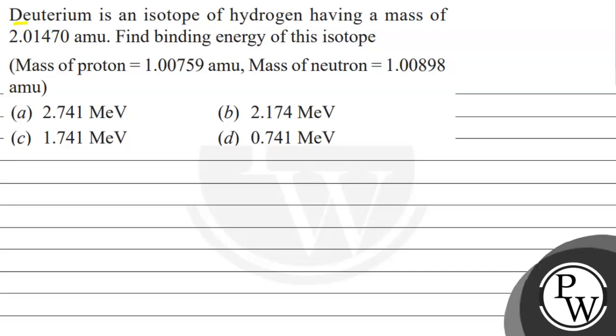Hello, let's read this question. The question says that deuterium is an isotope of hydrogen having a mass of 2.01470 amu. Find binding energy of this isotope.